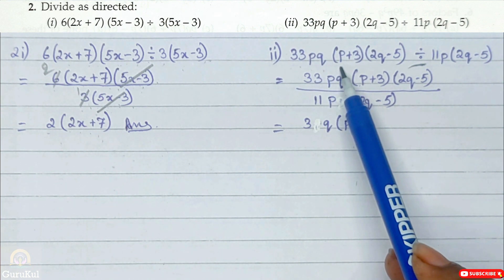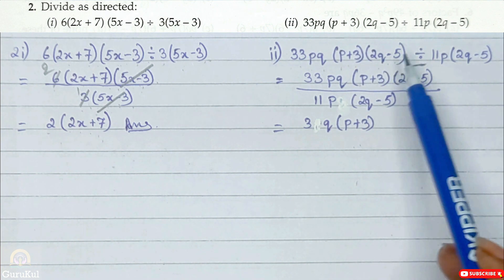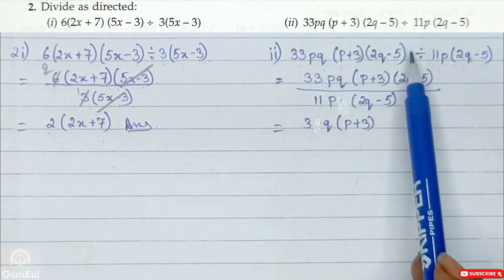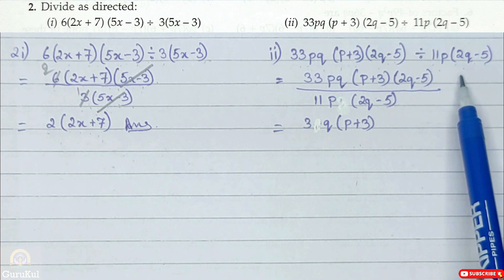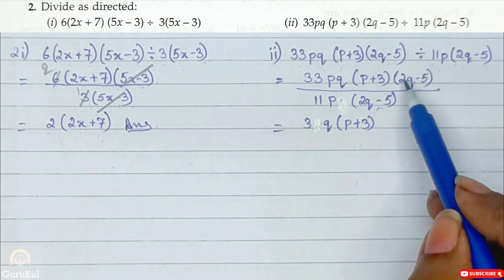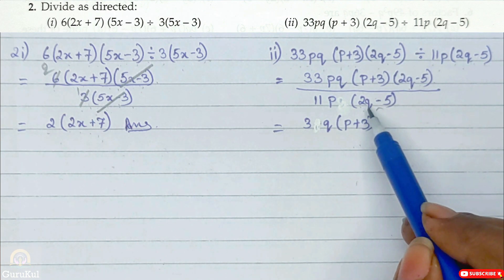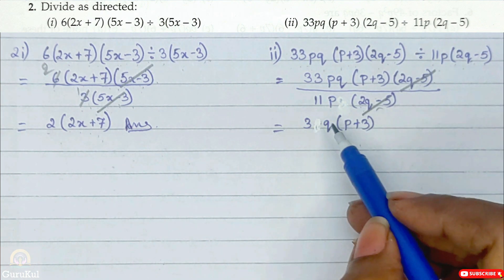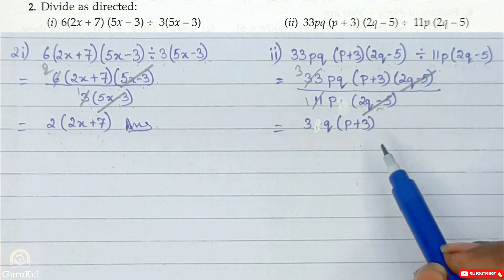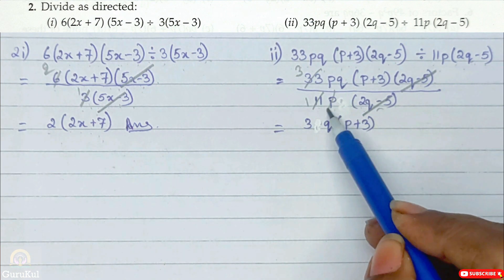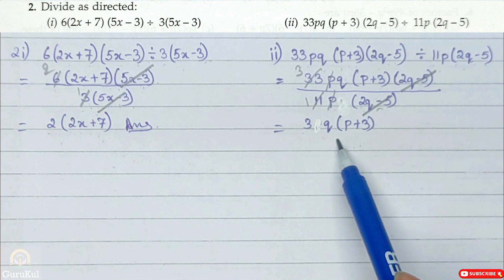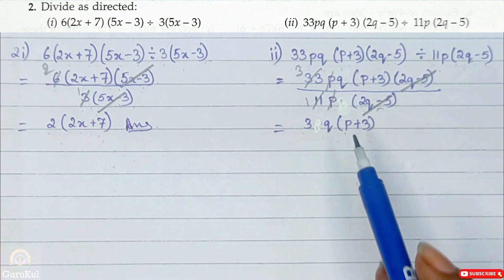Second part: 33pq(p + 3)(2q − 5) divided by 11p(2q − 5). The entire first term is the numerator and after the division sign is the denominator. We reduce: (2q − 5) in the numerator cancels with (2q − 5) in the denominator. Then 33 divided by 11 gives 3, and p cancels with p, leaving denominator as 1. So the answer is 3q(p + 3).